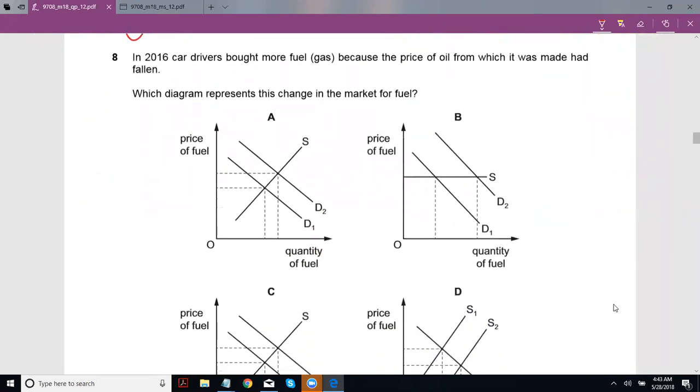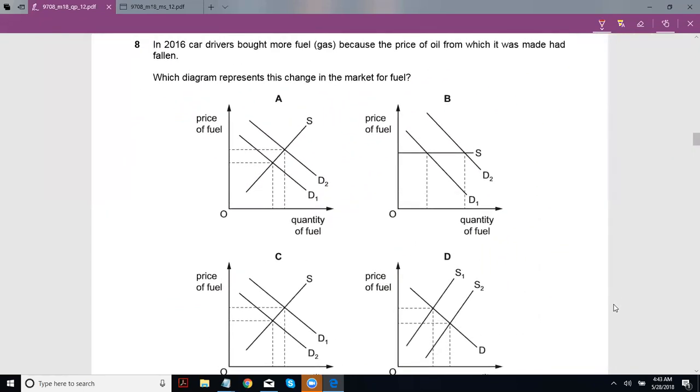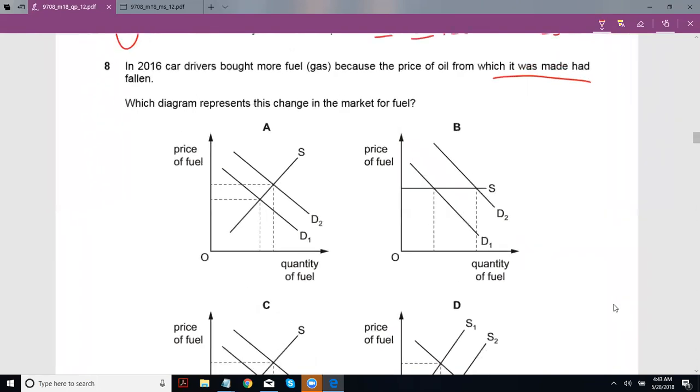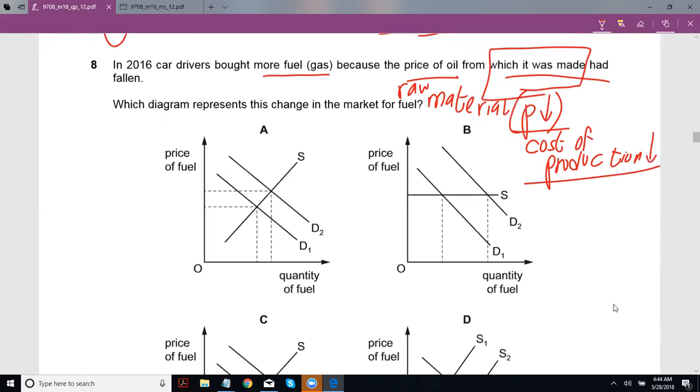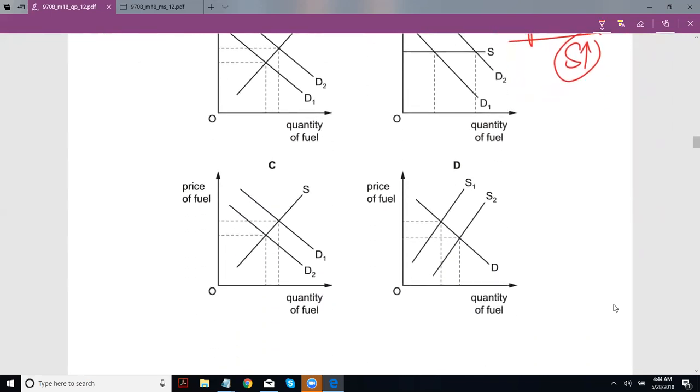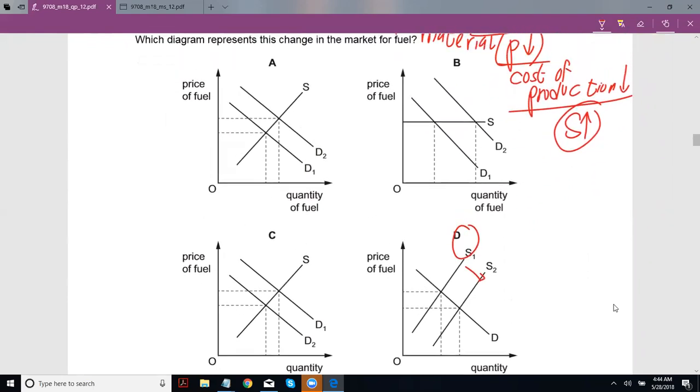Eight, in 2016 car drivers bought more fuel because the price of oil from which it was made had fallen. Which diagram represents this change in the market for fuel? Now understand to make fuel, they've given it to us that fuel is made from oil. So oil is like a raw material, you could say, for fuel, for making fuel. And if the price of a raw material goes down, we can say the cost of production of the particular good, in this case fuel, goes down. And if you remember, decreased cost of production is a factor that increases supply. Supply increases towards the right. So that is like this S2, S2. And there you go. That's the only correct corresponding answer.